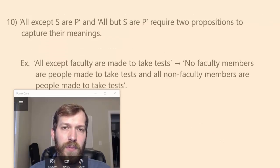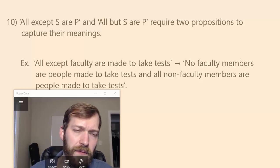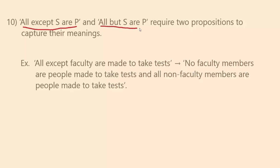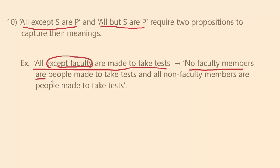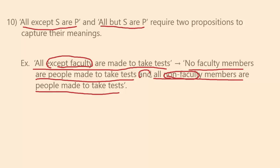Sometimes we're confronted by propositions that require a combination of categorical propositions in standard form. Examples include 'all except S are P' or 'all but S are P.' For example, 'all except faculty are made to take tests.' Since we're excepting faculty, we're committed to 'no faculty members are people made to take the test.' But we're also committed to non-faculty members: 'all non-faculty members are people made to take the test.' We need both of those together to capture the meaning of 'all except faculty are made to take tests.'